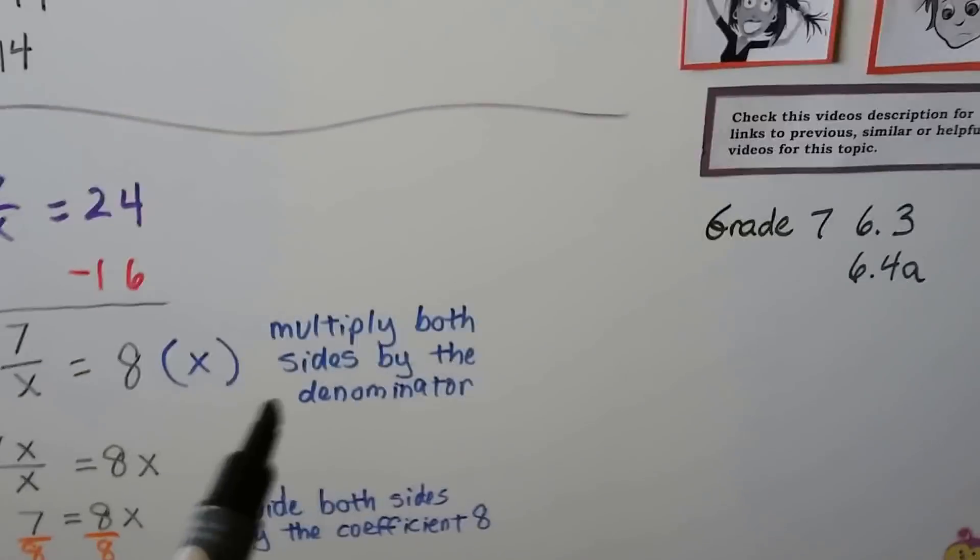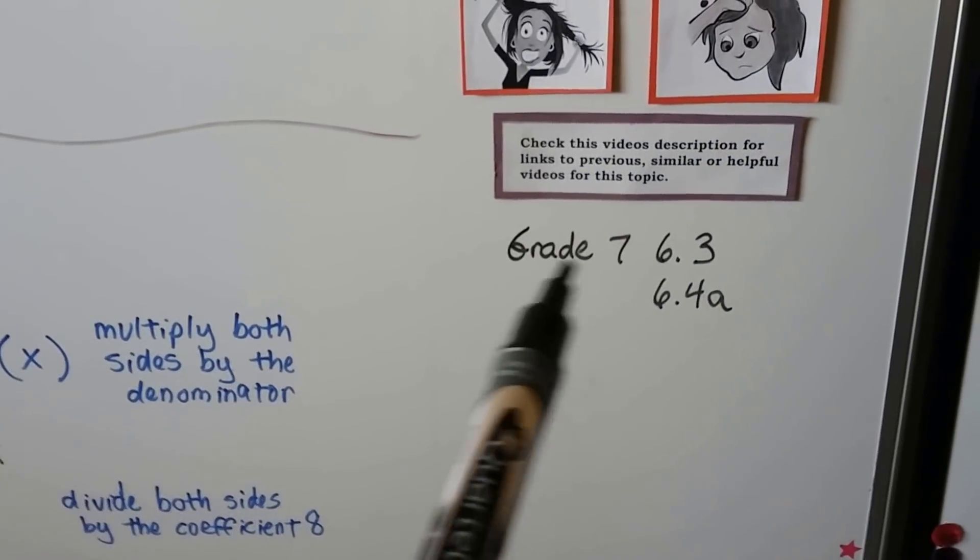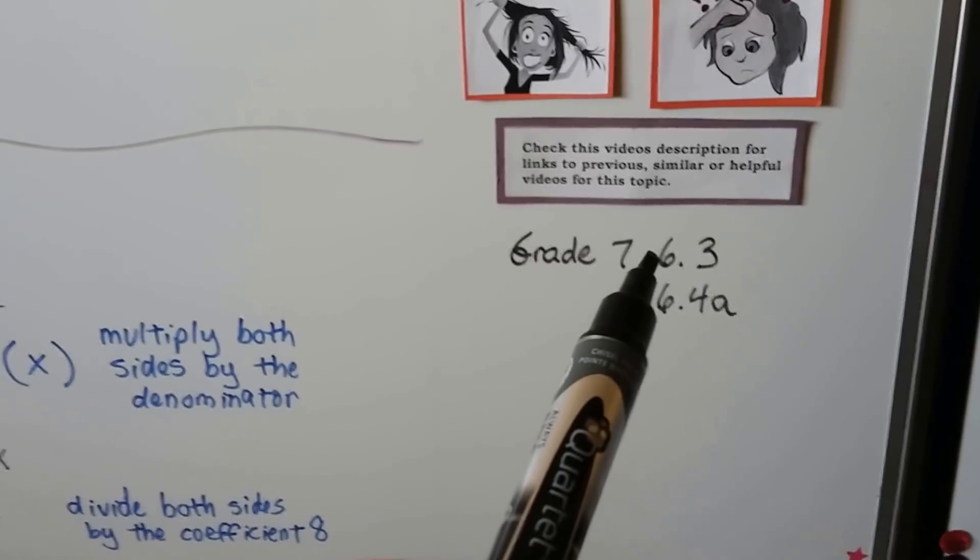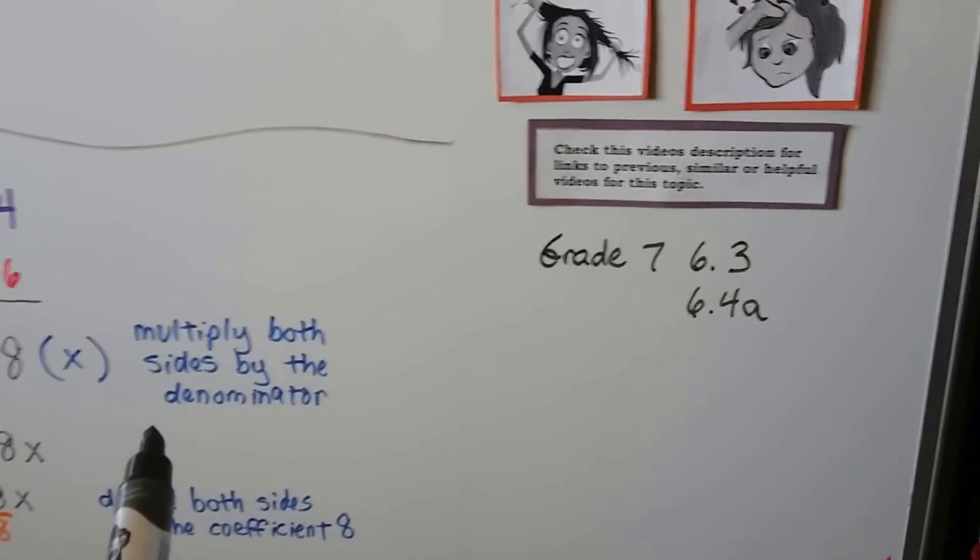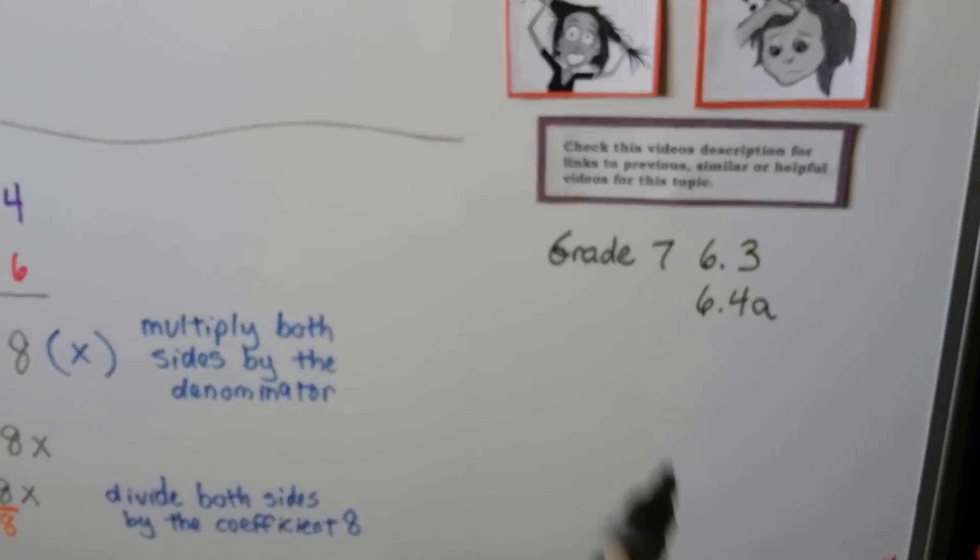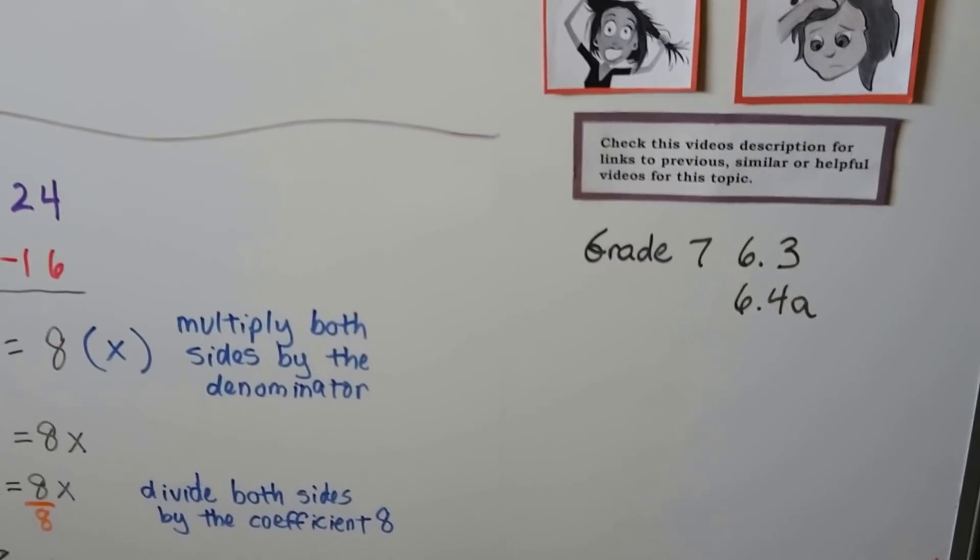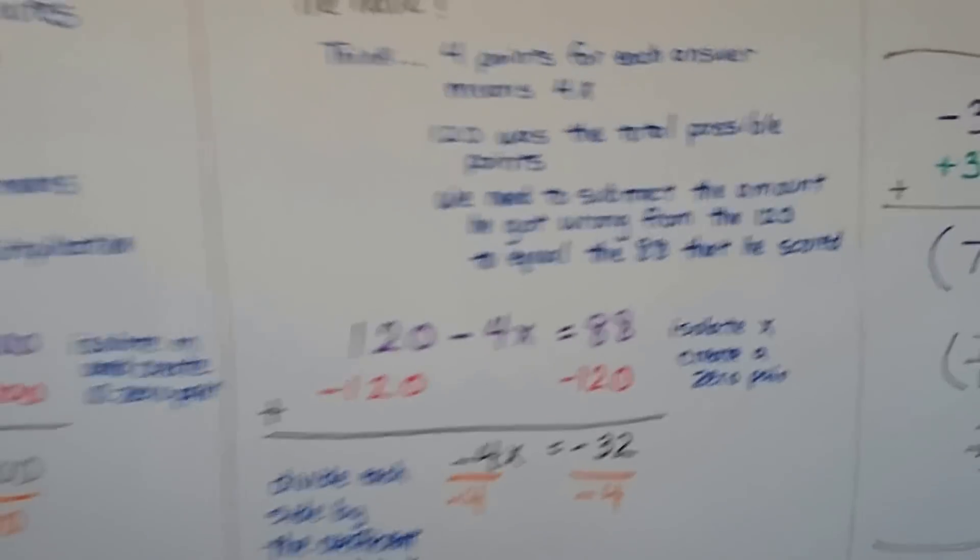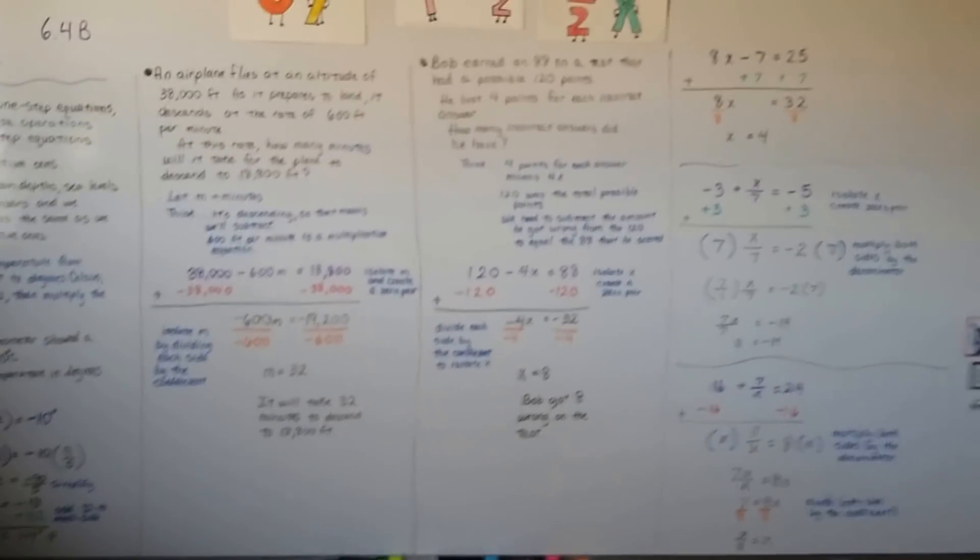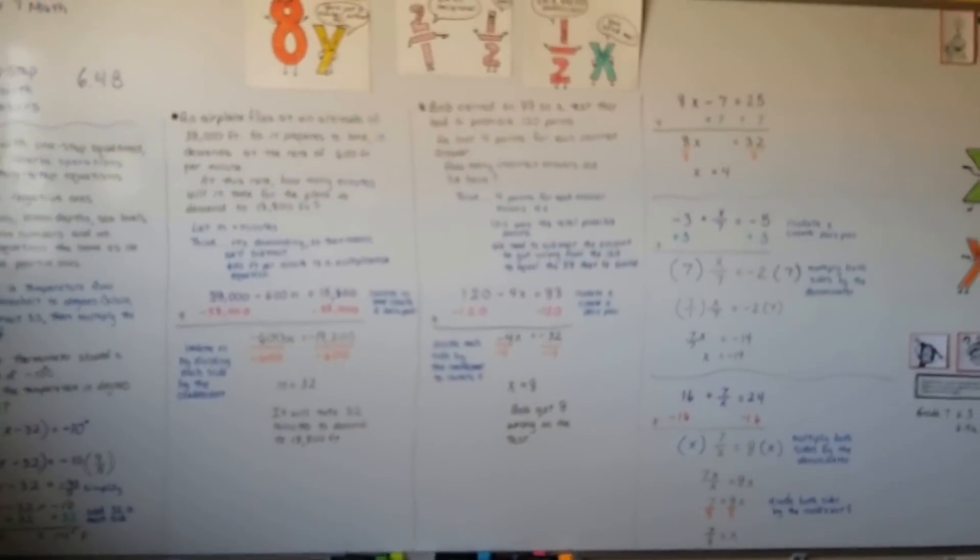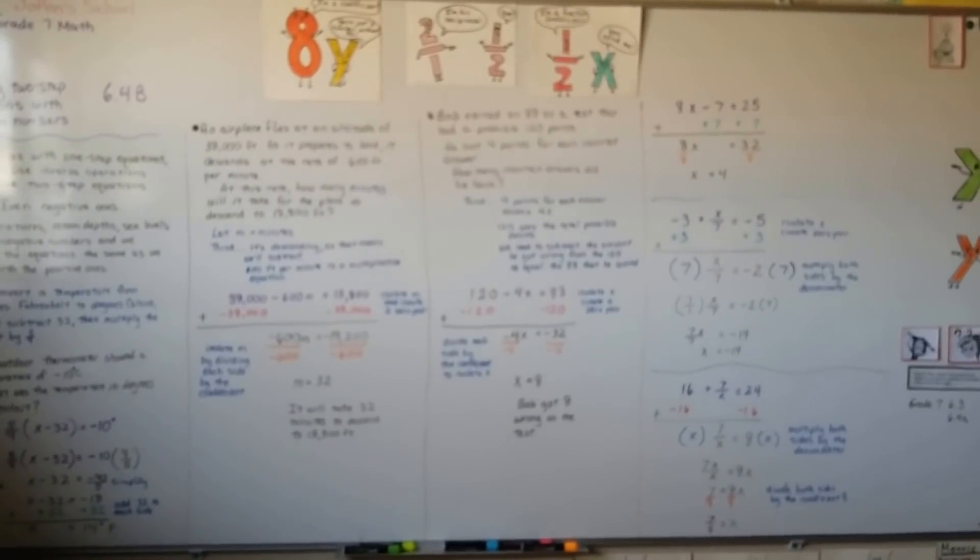There's going to be links in the description to the grade 7 math video for 6.3 that talked about what are two-step equations and the previous video, 6.4a. I hope this was helpful. Hit the like button if it was, and I'll see you next time. Keep trying. I'm proud of you. Bye.